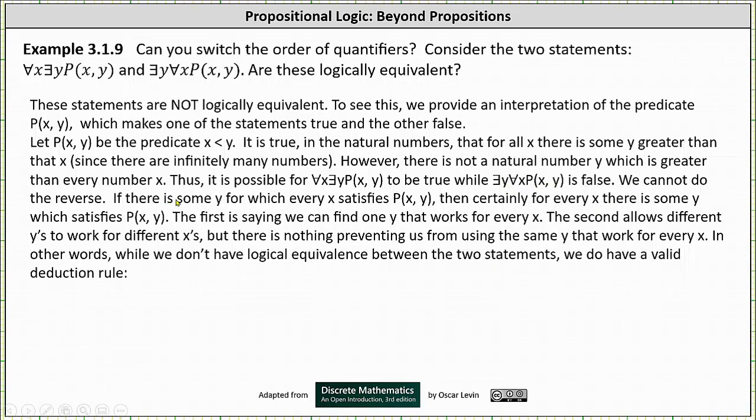We cannot do the reverse. If there is some y for which every x satisfies P(x, y), then certainly for every x there is some y which satisfies P(x, y).